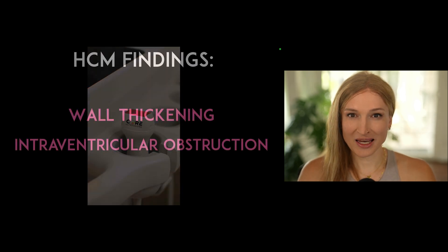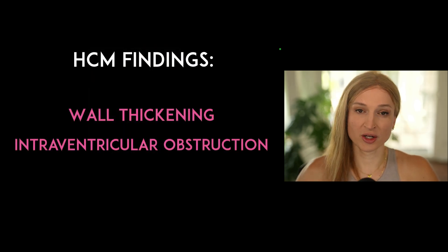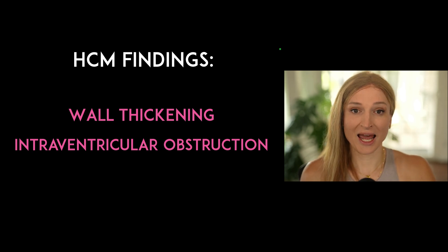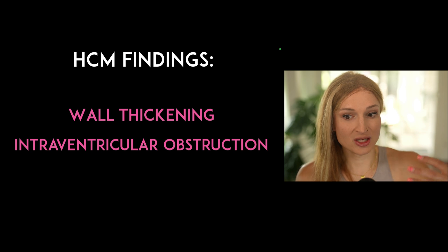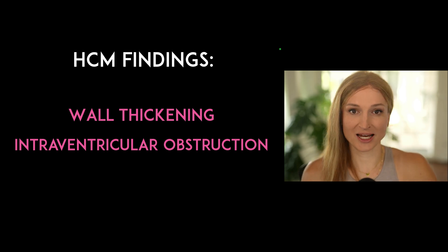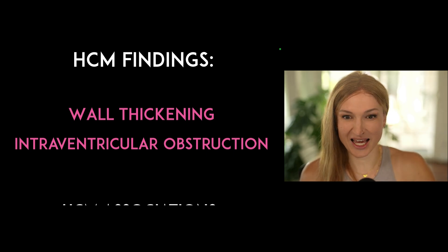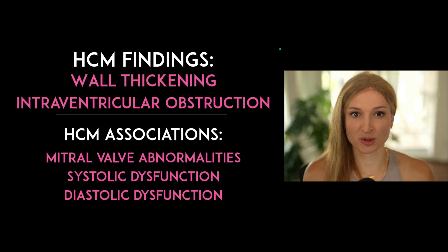Our main findings for hypertrophic cardiomyopathy, or HCM, are going to be wall thickening and intraventricular obstruction. Now, there are some other things that can occur in the setting of a patient with hypertrophic cardiomyopathy.